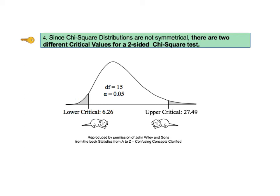KTU number 4: since chi-square distributions are not symmetrical, there are two different critical values for a two-sided, that is a two-tailed, chi-square test. The graphs on previous slides showed one-sided right-tailed tests. For one-sided tests — either left-tailed or right-tailed — there is only one critical value. But for two-sided tests, chi-square has two different critical values. This is unlike Z and T, which have symmetrical distributions and each have only one critical value that is added or subtracted from the mean. Since chi-square's distributions are not symmetric, the areas under the curve at the left and right tails have different shapes, so there are two different critical values — an upper and a lower — for a two-sided chi-square test.